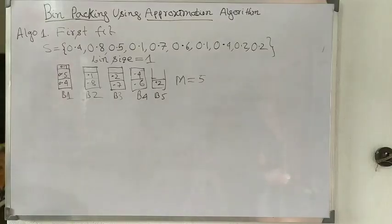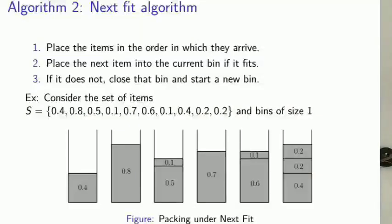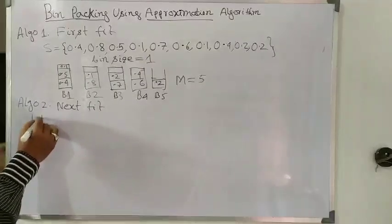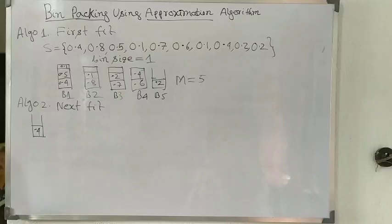The Next Fit algorithm is similar to First Fit in its first step. Step two is different: place the next item into the current bin if it fits. Step three: if it does not fit, close that bin and start a new bin. So for the example, the first element 0.4 goes into Bin 1. When 0.8 arrives, it cannot accommodate, so the bin is closed.